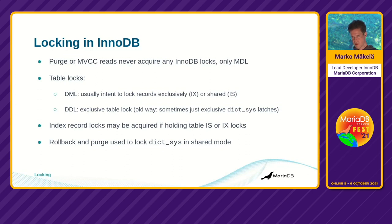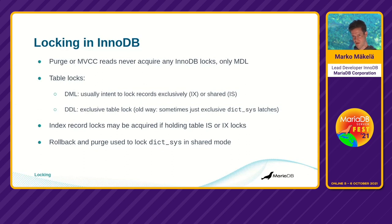Index record locks can only be acquired if there is a corresponding table lock. If an exclusive table lock exists, we don't have to acquire any index record locks, because that would be covered by the exclusive table lock. Because there was not consistent metadata lock acquisition inside InnoDB, rollback and purge used to acquire the DICT system latch in shared mode, just to prevent any concurrent DDL operation from dropping the table.